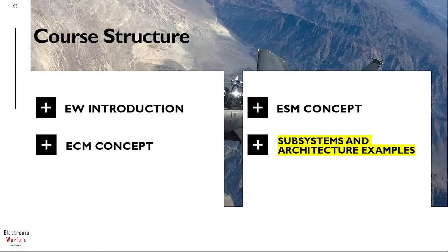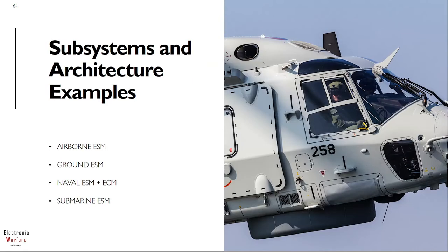Finally, the last section of this long but complete course — a full journey starting from introduction up to really technical considerations and through commercial product examples. Now let's move to the subsystems and architecture examples, going through real examples already flying, patrolling, navigating, and protecting our nations. You will find pretty much all electronic warfare options: naval, airborne, ground-based, and submarine-based, giving you the overall picture with commonalities and particularities between all of them.